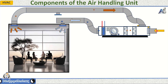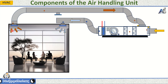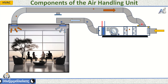Here are the main components of an AHU. 1. Housing/Casing: The outer structure that encloses all the components of the AHU. It is designed to protect the internal parts and reduce noise and thermal losses.